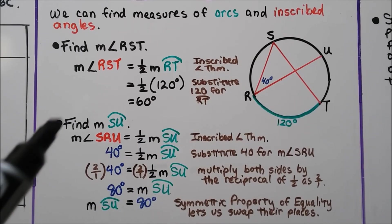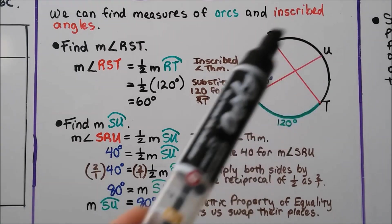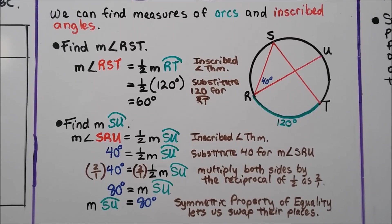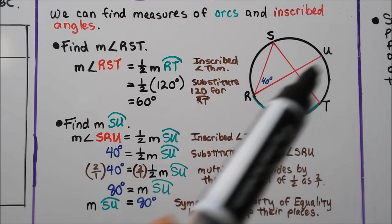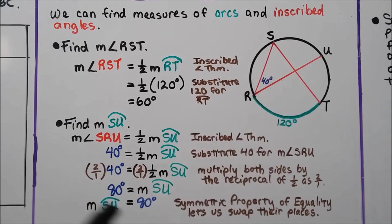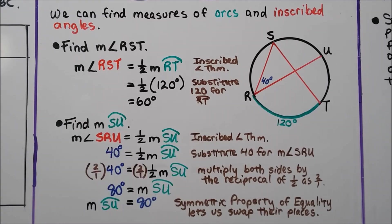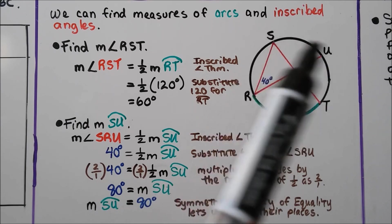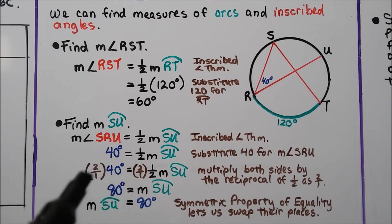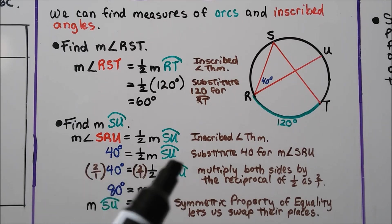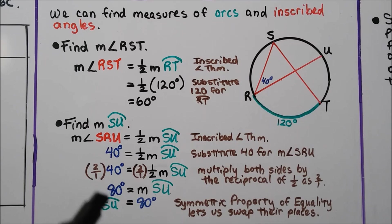Next, we need to find the measure of arc SU. By the inscribed angle theorem, the measure of angle SRU equals half the measure of arc SU. We're told angle SRU is 40 degrees, so 40 equals half the measure of arc SU. Multiplying both sides by 2, we get 80 degrees equals the measure of arc SU.